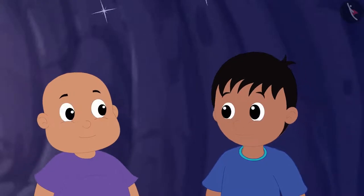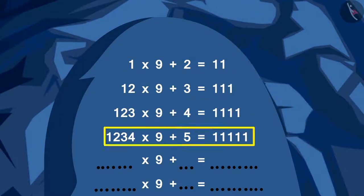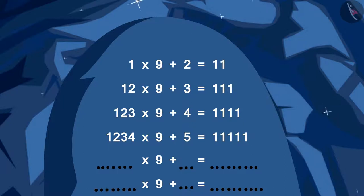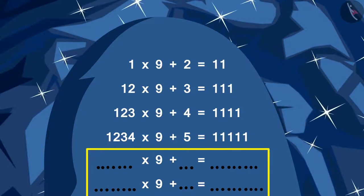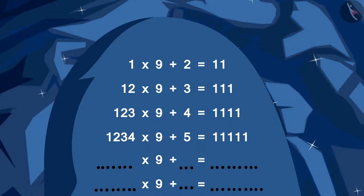Bablu, this door has closed the path ahead of the cave. And there are some multiplications written on this door. And then there are some blank spaces at the bottom. Raju told Bablu.